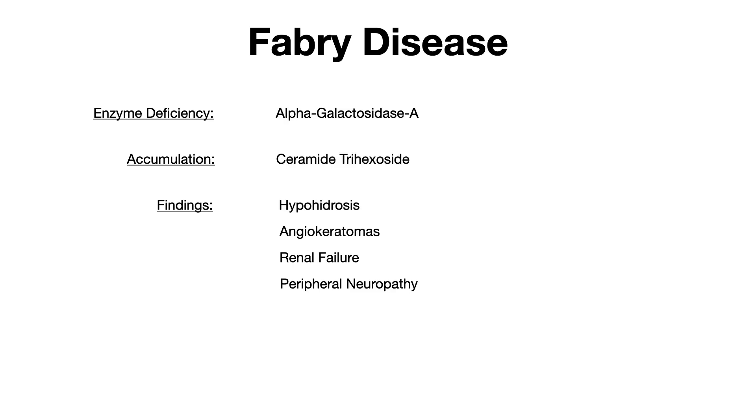We'll start with Fabry disease. For all of these lysosomal storage diseases, the pattern is: some type of enzyme deficiency, and because that enzyme is absent or deficient, there's an accumulating substrate, and then clinical or histopathological findings. For Fabry disease, the enzyme deficiency is alpha-galactosidase A. Because that enzyme is absent, the accumulating substrate is ceramide trihexoside.